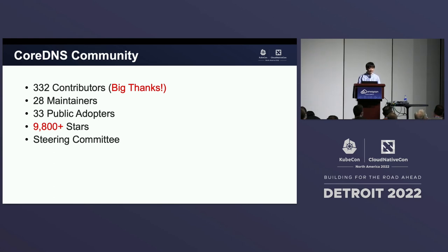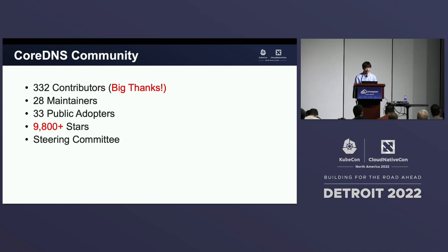We also have 9,800 stars. As you can see, it's getting closer to 10,000 — so let's try to reach that milestone. As I mentioned earlier, Miek Gieben decided to step down from the project lead position early this year. After some discussion, we reorganized CoreDNS into a steering committee model. Every year, a committee member will be re-elected. You have to become a maintainer first to be considered as a candidate for the committee. But as I said, becoming a maintainer is very easy in the CoreDNS community.